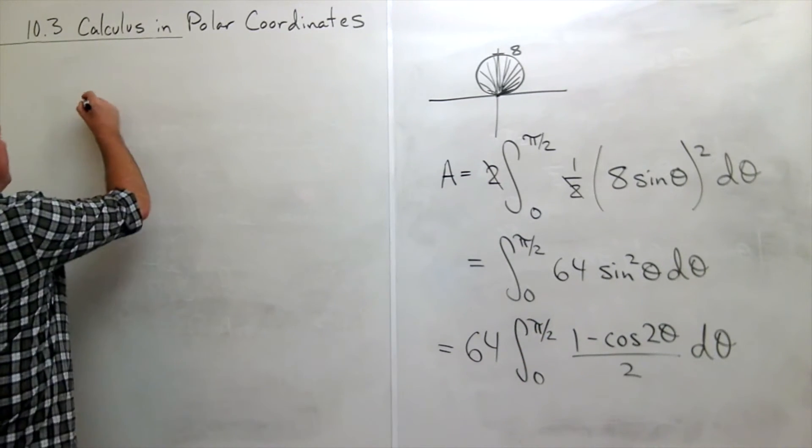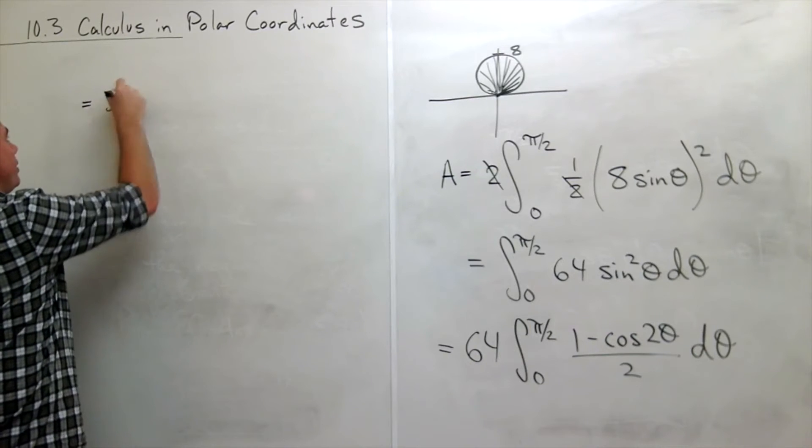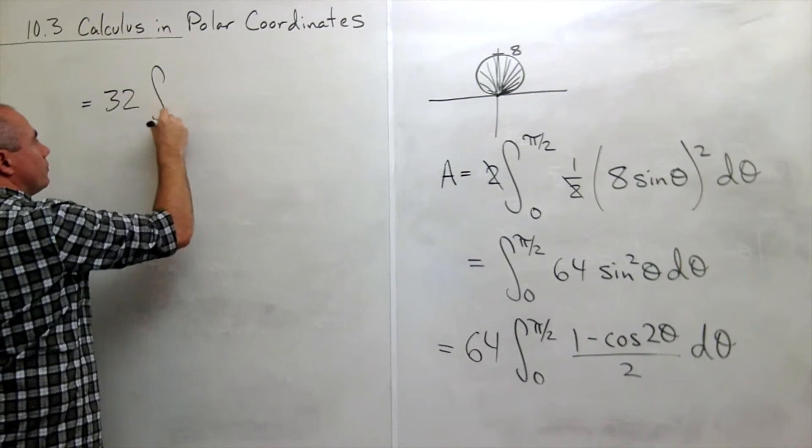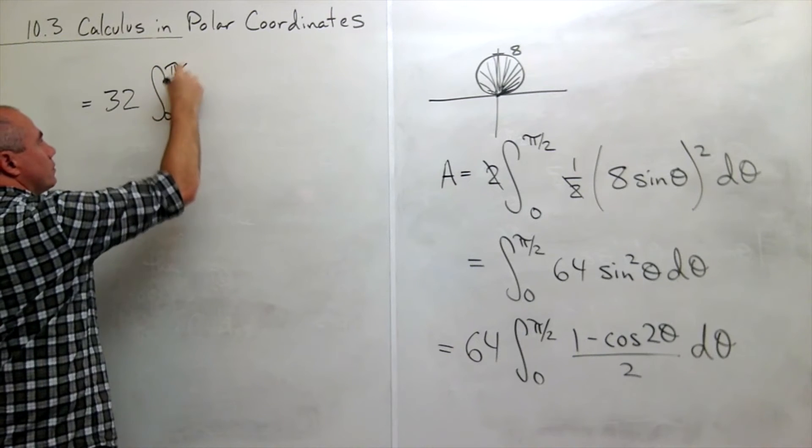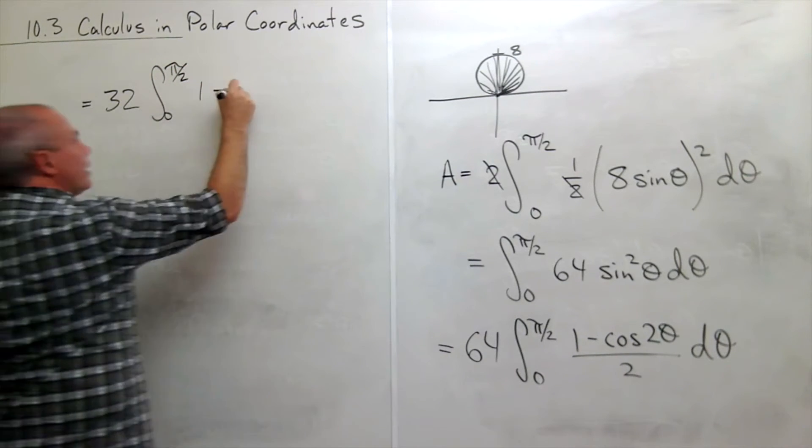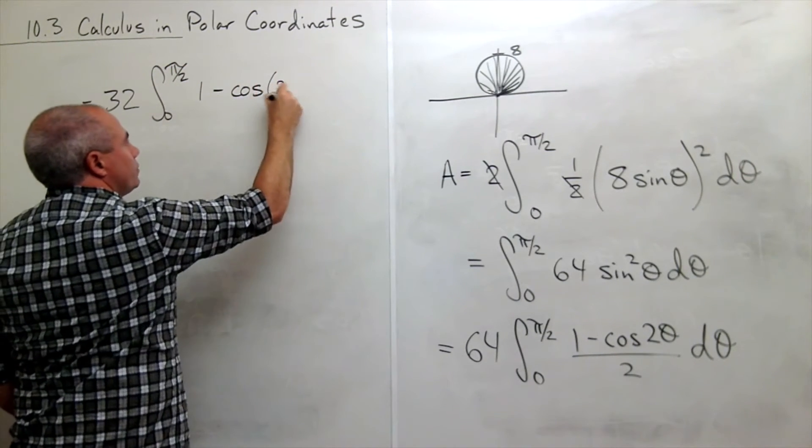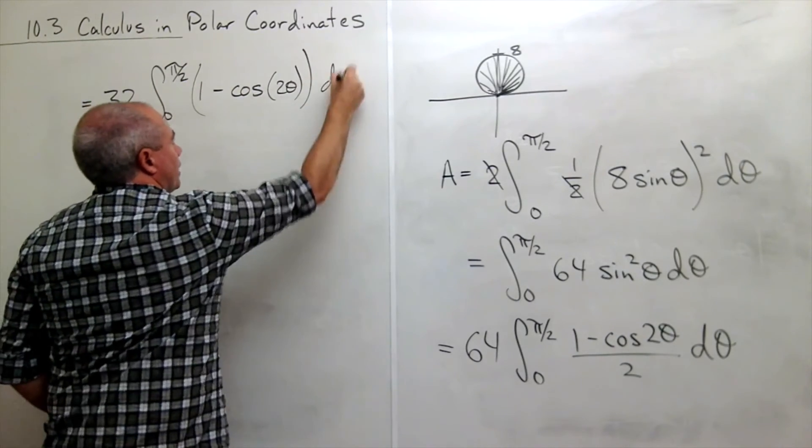If I pull the 2 out I'm left with 32 integral from 0 to pi over 2 of 1 minus cosine of 2 theta d theta.